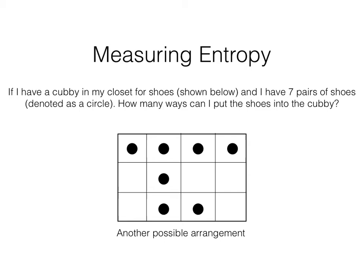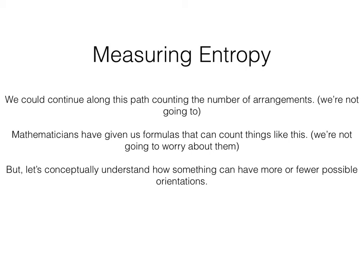But it turns out that there are many other orientations. This diagram gives you another possible orientation. And ultimately, to be able to measure the entropy of the shoes in my cubby, I would need to figure out how many possible orientations there are of my seven pairs of shoes within my 12 locations of the cubby.